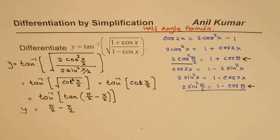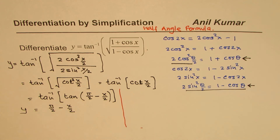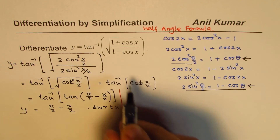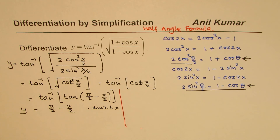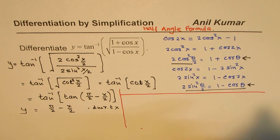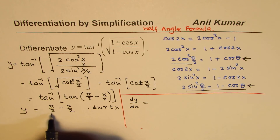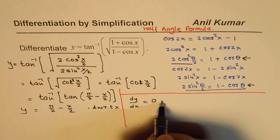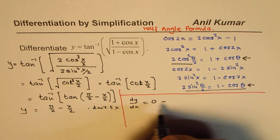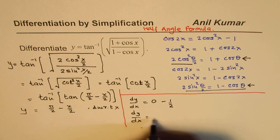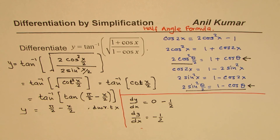So y equals π/2 minus x/2. The derivative is very simple now — differentiating with respect to x, π/2 is a constant so its derivative is 0, and the derivative of x/2 is 1/2, giving dy/dx equals minus 1/2.